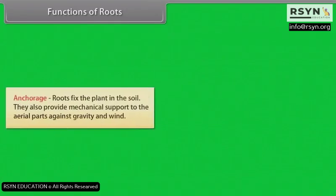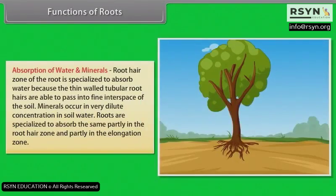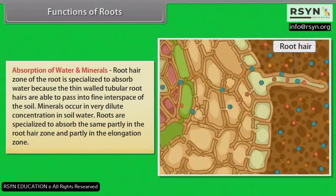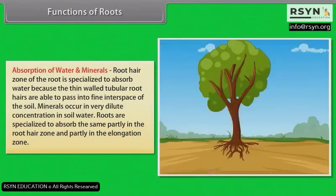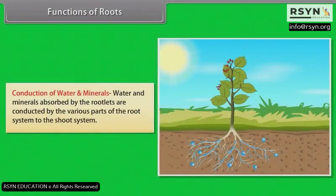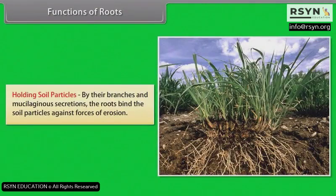Functions of roots. Anchorage: Roots fix the plant in the soil and also provide mechanical support to the aerial parts against gravity and wind. Absorption of water and minerals: The root hair zone is specialized to absorb water, as the thin-walled tubular root hairs are able to pass into fine interspaces of the soil. Minerals occur in very dilute concentration in soil water; roots are specialized to absorb them, partly in the root hair zone and partly in the elongation zone. Conduction: Water and minerals absorbed by the rootlets are conducted by the various parts of the root system to the shoot system. Holding soil particles: By their branches and mucilaginous secretions, the roots bind the soil particles against forces of erosion.